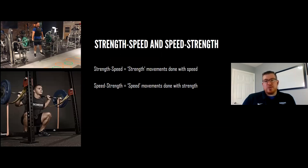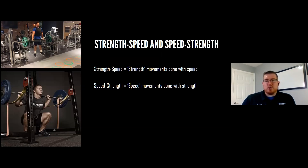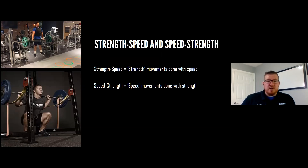Moving towards the velocity side, we have strength-speed and speed-strength — people often confuse these, and rightfully so. A way to think about it: strength-speed is strength movements done with speed — for example, squatting quickly. Speed-strength is speed movements done with strength — for example, a weighted trap bar jump, where a jump is a speed movement and we've added load.